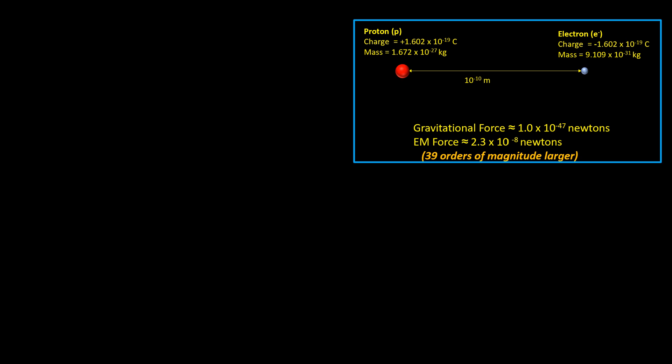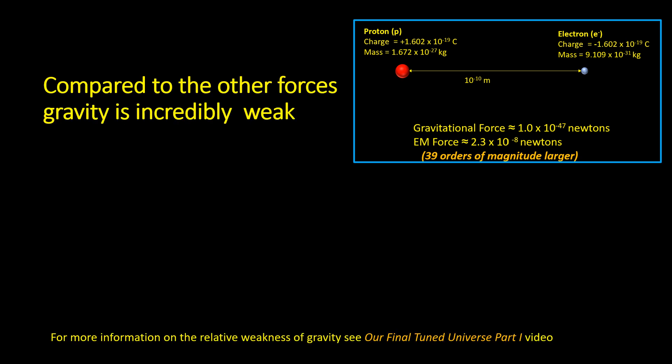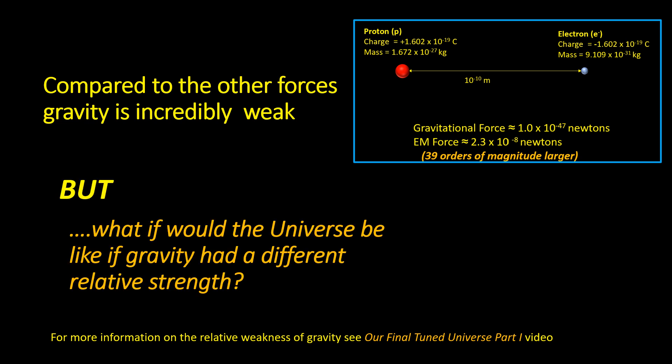Compared to other forces, gravity is incredibly weak. The force between an electron and proton due to gravity is 39 orders of magnitude weaker than the electrostatic interaction between them. But what would the universe look like if gravity had a very different strength?